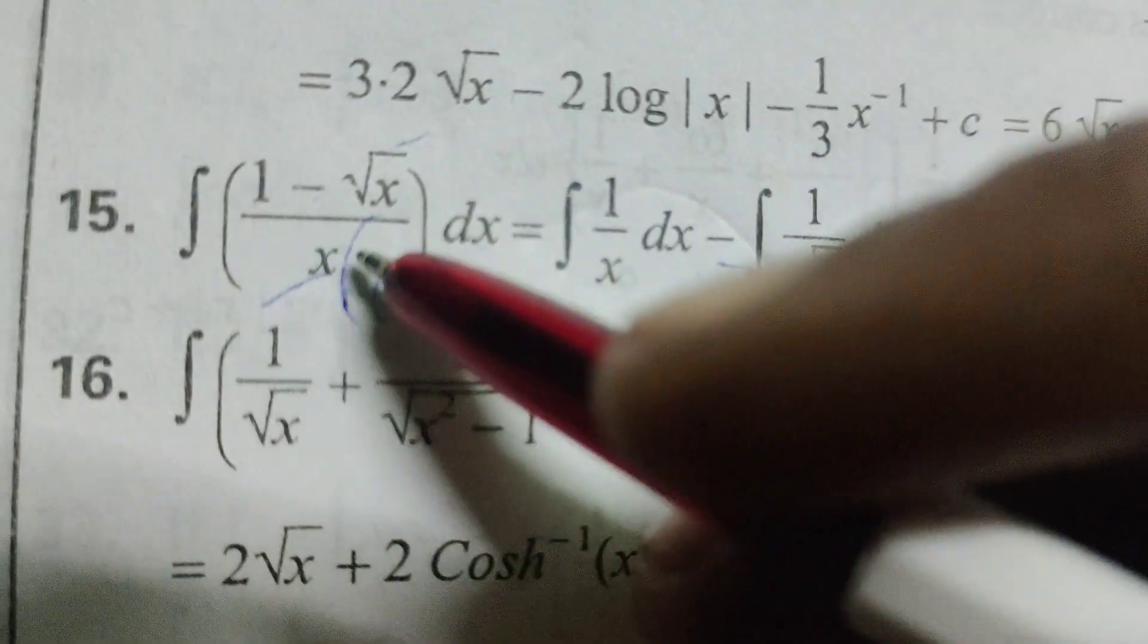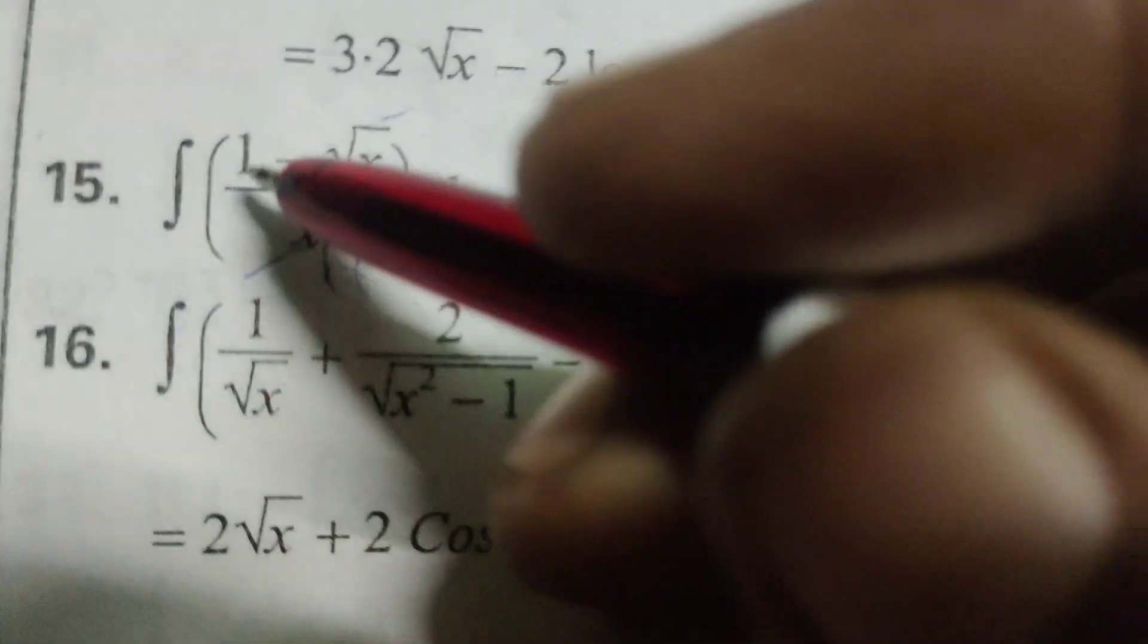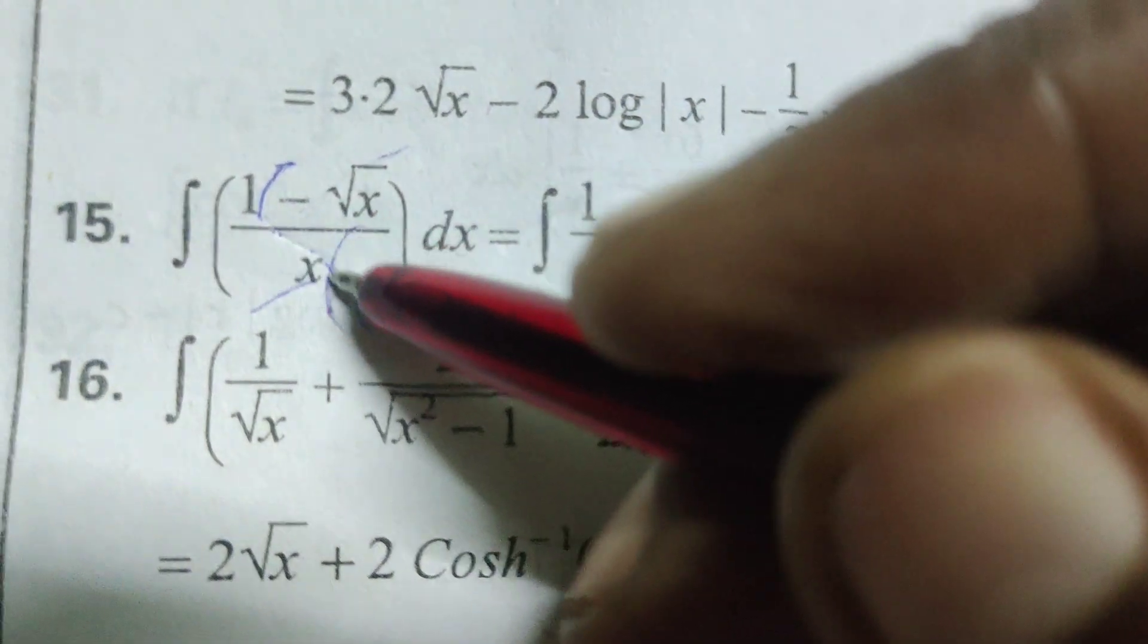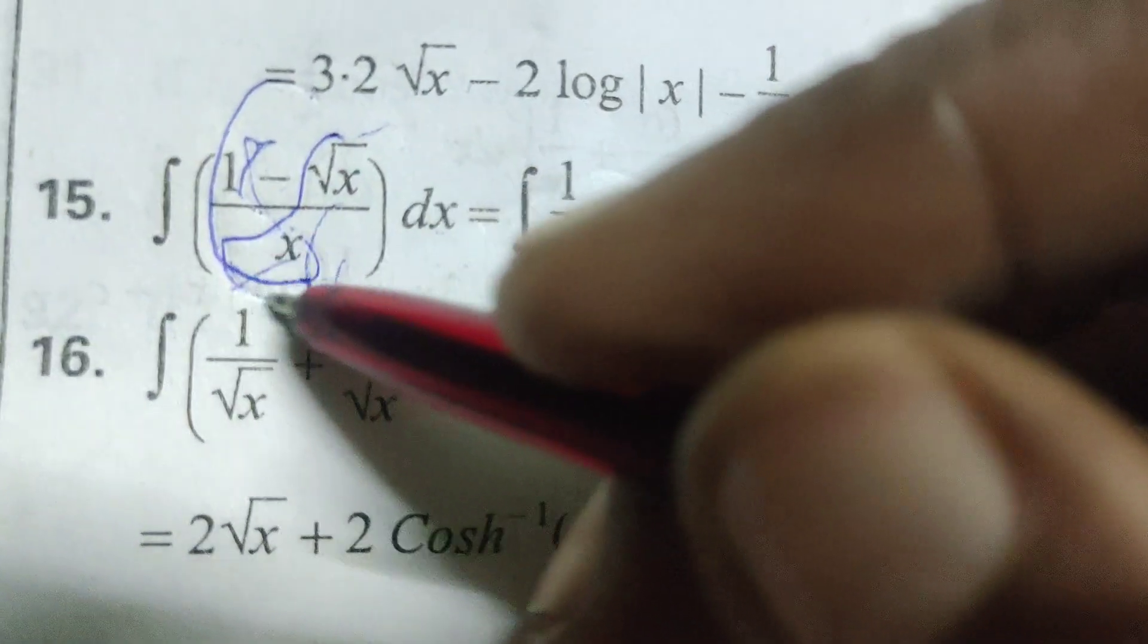Integral of 1 minus root x by x dx. Here, separating this numerator and denominator and separating this numerator and denominator.